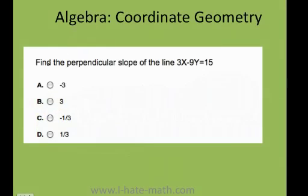Okay, so in this question we need to find the perpendicular slope of this line, 3x minus 9y equals 15. Don't forget, y equals mx plus b. So we need to figure out what is the slope of the line, so I can find the negative inverse. Remember, because they're asking me for the perpendicular slope.